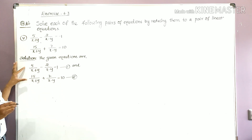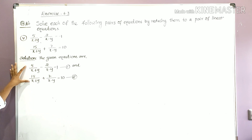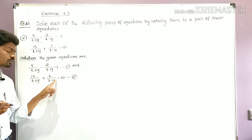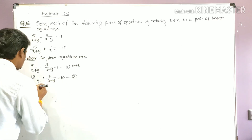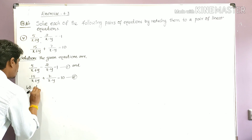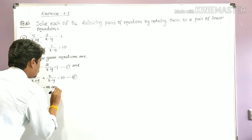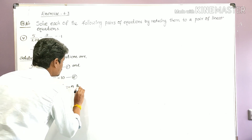Now we observe the terms. In both equations, 1/(x+y) is common in the first terms — 5/(x+y) and 15/(x+y). So let 1/(x+y) = m. The second terms are 2/(x−y) and 7/(x−y), where 1/(x−y) is common. So let 1/(x−y) = n.